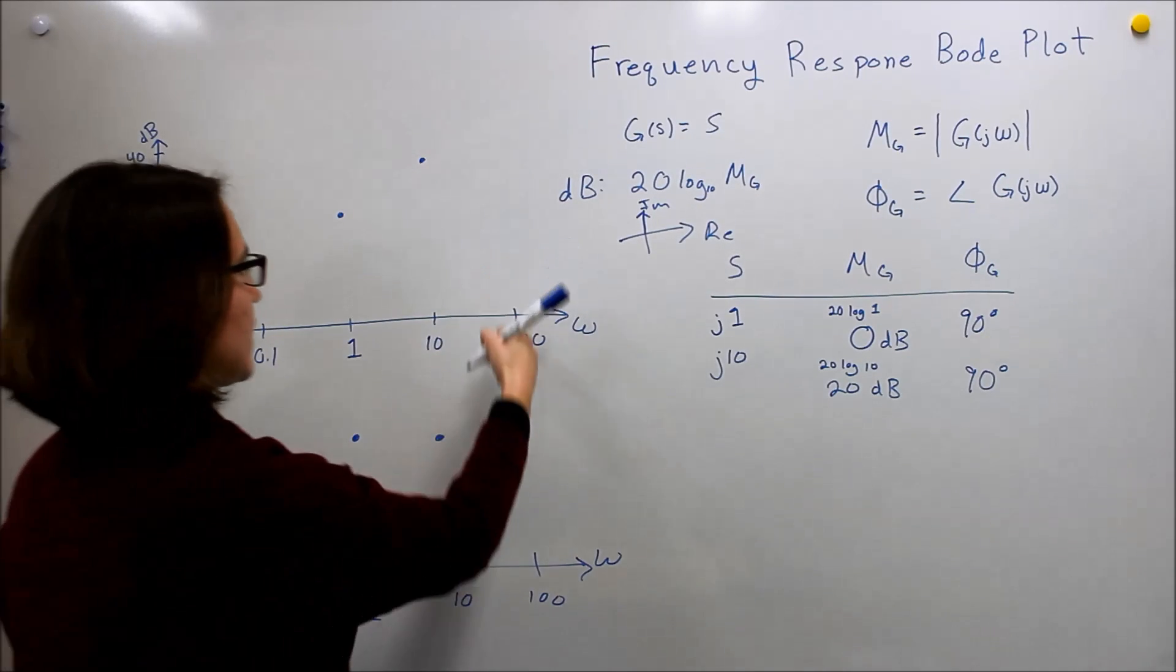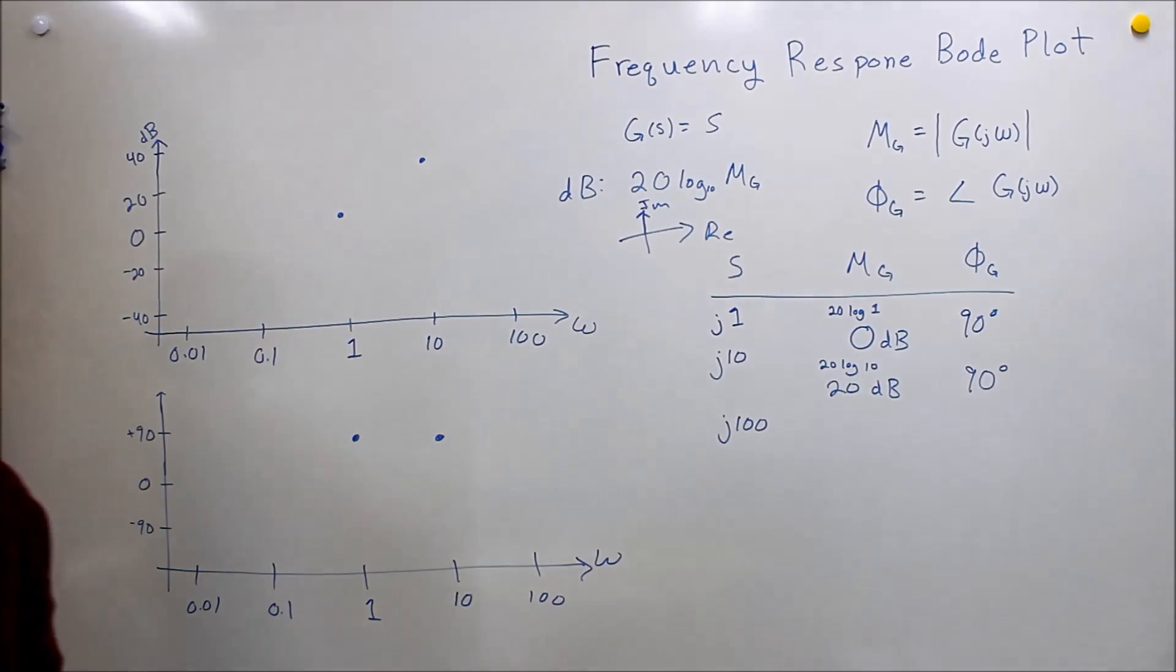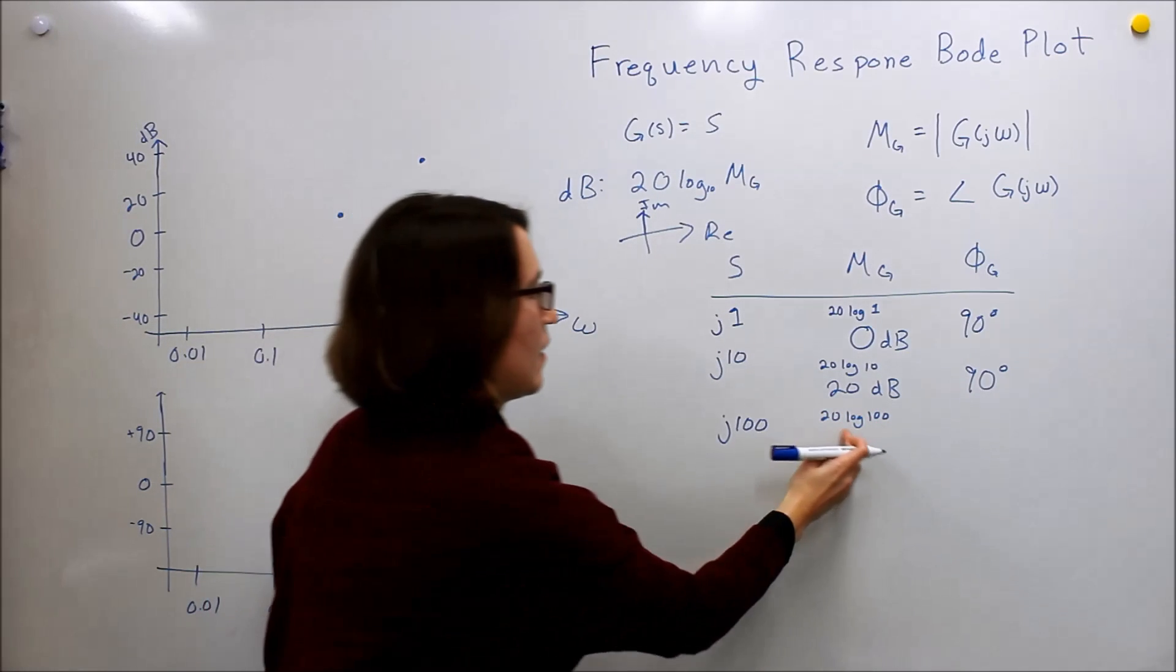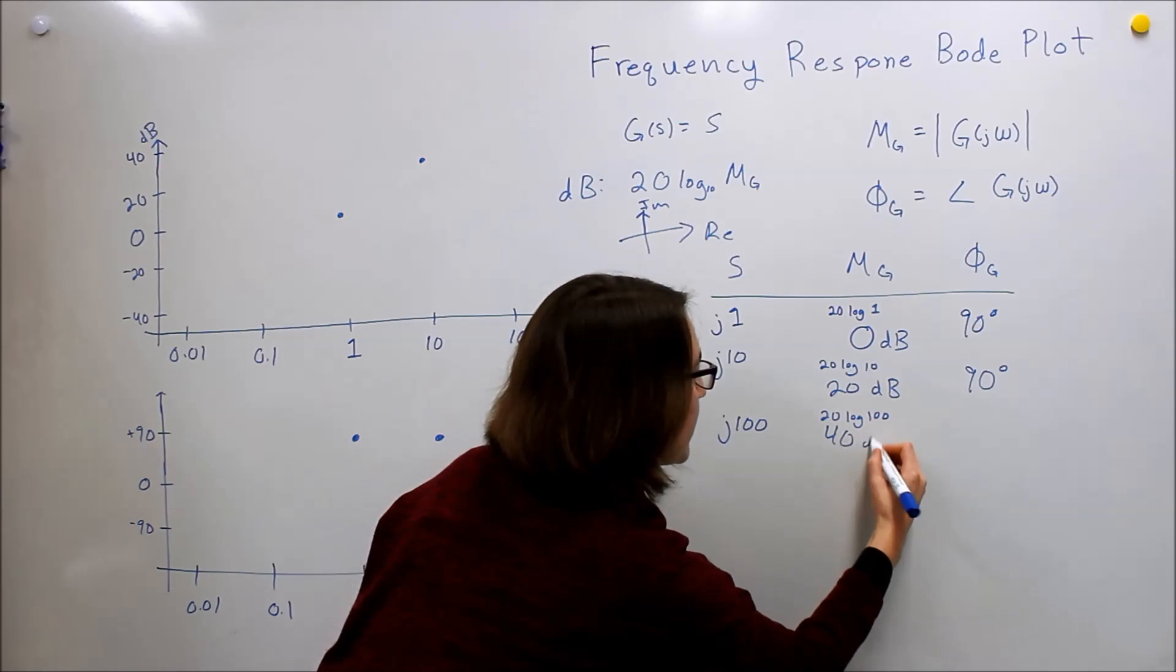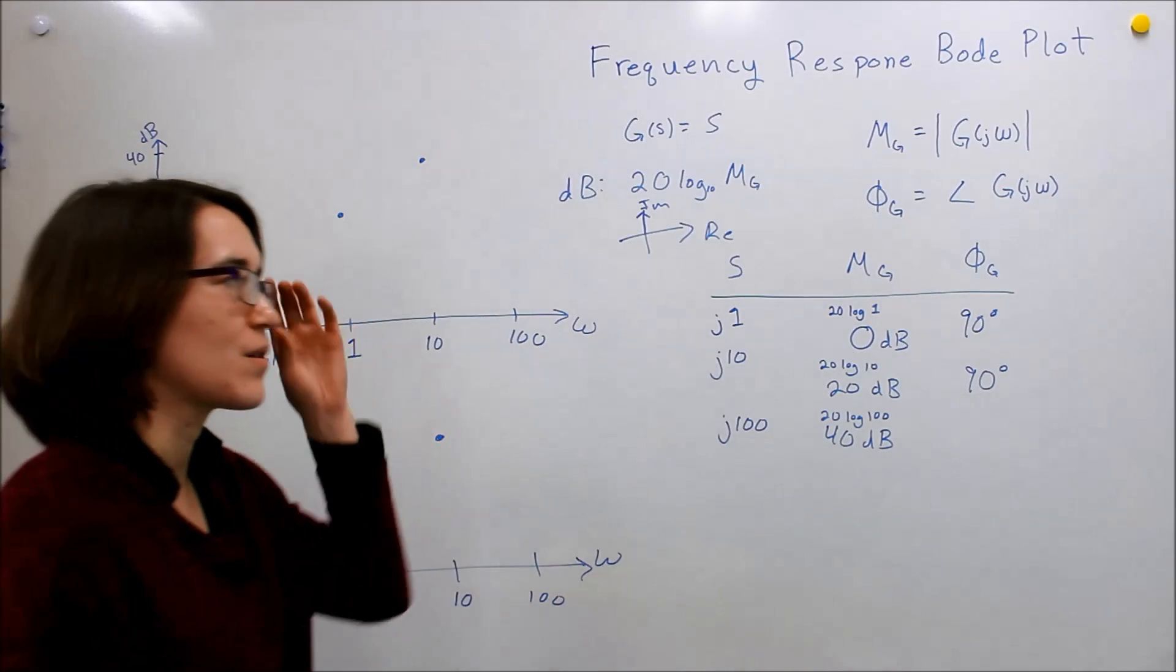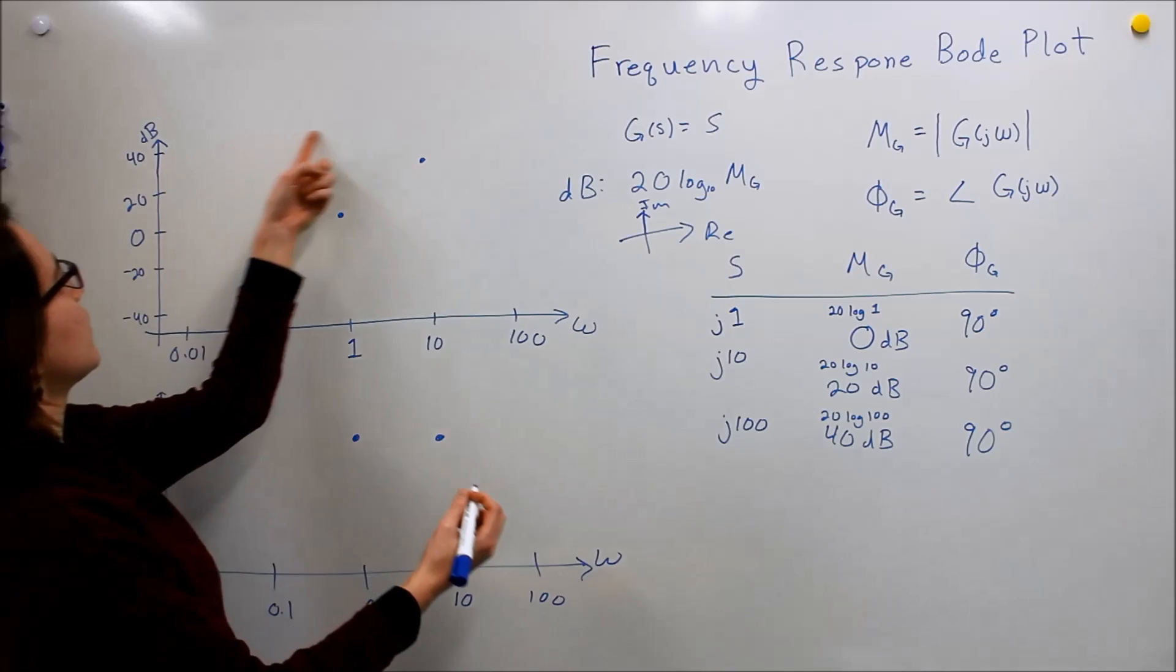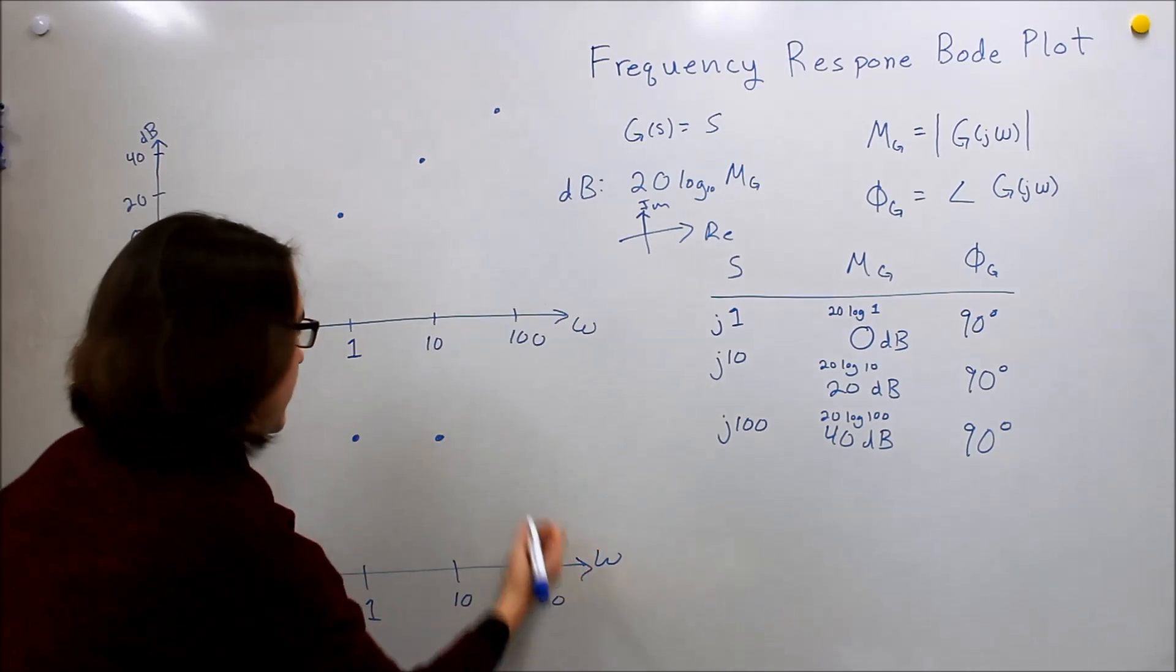Let's do a few more points. Let's look at j times 100. If we put that in, 20 log of 100 - log of 100 is 2 times 20, so we get 40 dB. Again, j is always in the same direction, so we still have 90 degrees. At 100, we get 40 dB and 90.